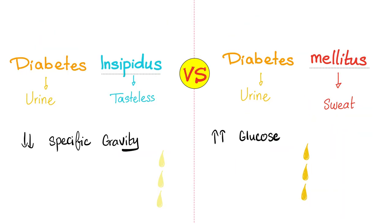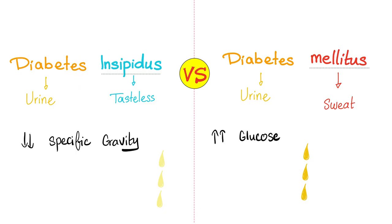If you lack antidiuretic hormone, you'll have a disease known as diabetes insipidus. Diabetes means urine; insipidus means insipid — tasteless. This is colorless, very dilute urine. Why? Because you did not reabsorb any of the free water. All of the free water ended up in the urine. The urine is super diluted, colorless, tasteless, with very low specific gravity.